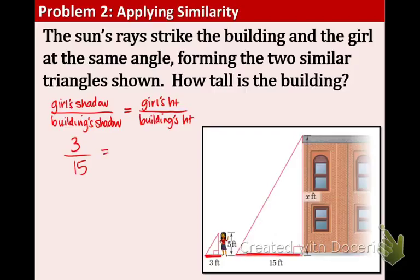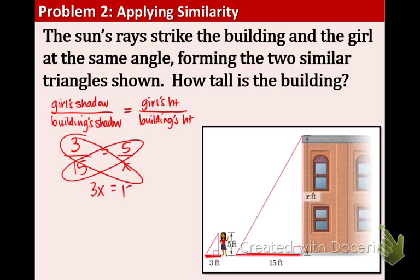The girl's height is 5, and the building height, we do not know, it's x. Cross multiply. 3x equals 15 times 5. 15 times 5 is 75. 3x equals 75.